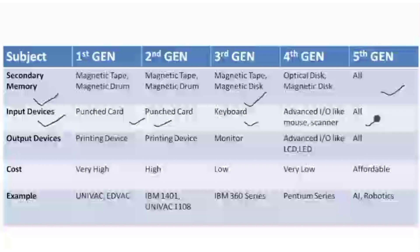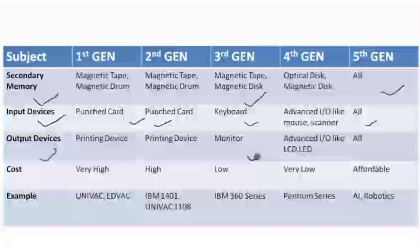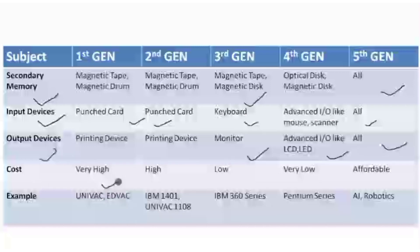In the fifth generation there are again no restrictions on input devices. For output devices: in the first and second generation output was received through printing devices. In the third generation we started using monitors. In the fourth generation advanced output devices such as LED and LCD displays came into use. In the fifth generation there is again no restriction.